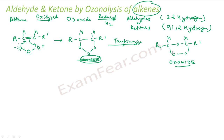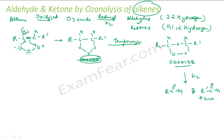Now reduce the ozonide with H2 or zinc. The ozonide ring breaks to give two carbonyl compounds plus water. In the example where the alkene had two alpha hydrogens, both carbons carried an H, so both products are aldehydes (R-CHO and R'-CHO). If only one carbon had an H (one alpha hydrogen), you get one aldehyde and one ketone.